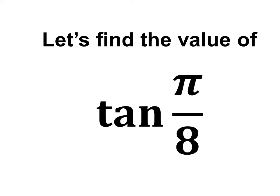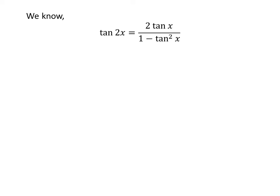In this video, we will learn to find the value of tangent of pi upon 8. We know the famous trigonometry identity tangent of 2 times x is equal to 2 times tangent of x upon 1 minus square of tangent of x. The proof of this trigonometry identity has been explained in the video appearing in the upper right corner of this video. The link of the video is also given in the description section.